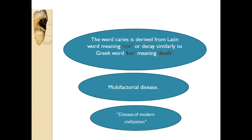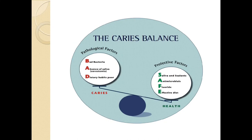Caries literally means death and it is a multifactorial disease. It is known as a disease of modern civilization because it was very rare in the previous era; after civilization, dental caries has become a pandemic. There is always a caries balance happening in our mouth. Protective factors are saliva, antimicrobials, fluorides, and an effective diet. On the other side, xerostomia — absence of saliva — and excess consumption of sucrose will promote caries. More concentration on protective factors means caries will not happen; once the balance is lost, caries will occur.